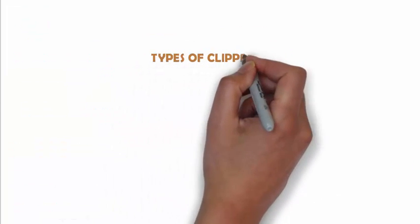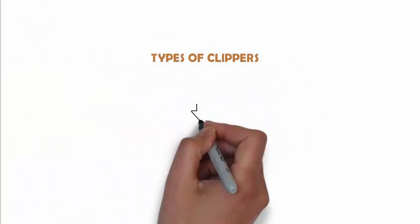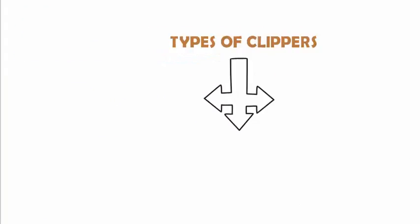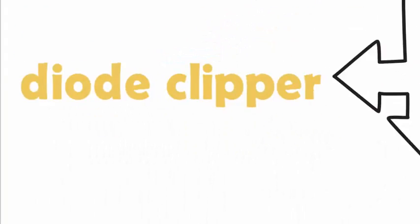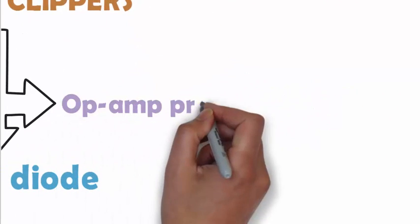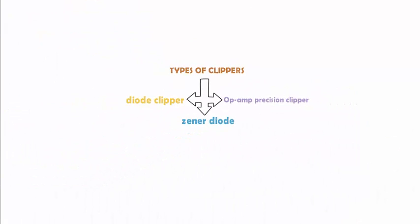Now coming on to the types of clipper, it can be divided into three types: diode clipper, zener diode clipper, and op-amplifier precision clipper. I know it's a pretty long name. Come, let's talk about each of them in detail.